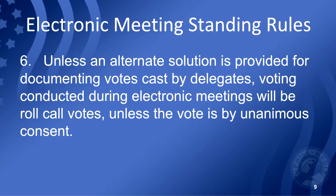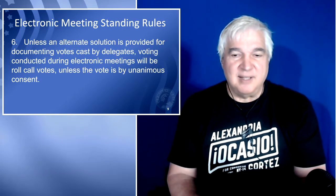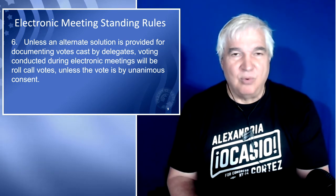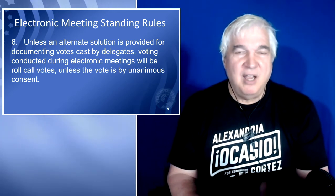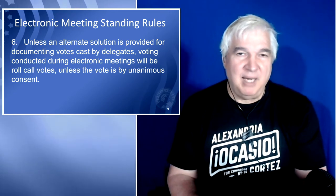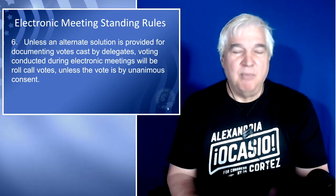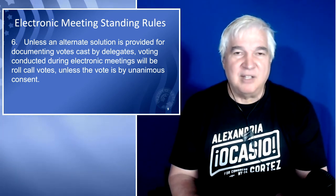Rule number six: unless an alternate solution is provided for documenting votes cast by delegates, voting conducted during electronic meetings will be roll call votes unless the vote is by unanimous consent. Unanimous consent is a great tool because if everyone is in agreement, you don't have to go through a lot of processes that drag the meeting down. Because this is a standing rule, if a State Central Committee meeting is held electronically, that assembly can suspend the rules. However, if it is a caucus meeting or a committee meeting, they do not have the ability to suspend these rules because they are not the body that put them in force. Most meetings are 20 people or less, which makes a roll call vote feasible.